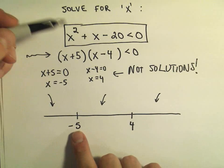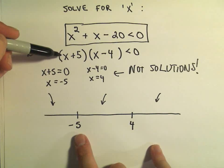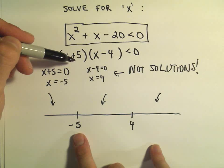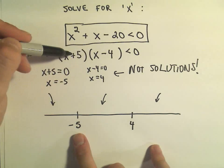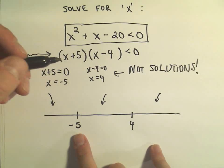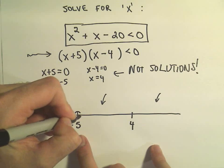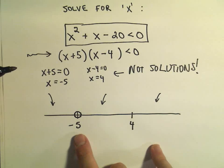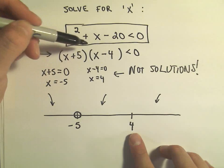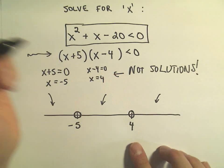Notice if we plug negative 5 in, if we look at it in the factored form, we would get 0 for the first factor. So the whole left side would turn into 0, and is 0 less than 0? Well, it's equal to it, but it's not less than, so we don't use that. So I'm going to put an open circle to indicate that it doesn't work. Likewise if you plug 4 in, we're going to get 0 out. So that doesn't work.